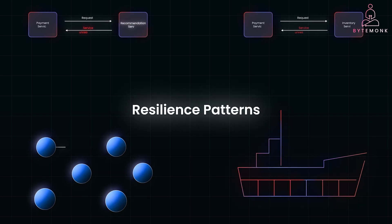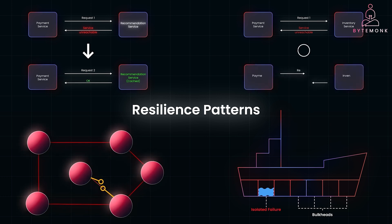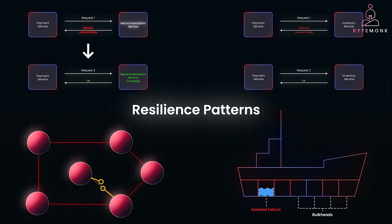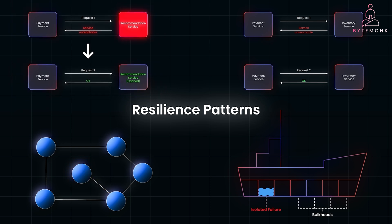To wrap things up, resilience patterns are essential for keeping your microservices running smoothly even when things go wrong — whether using circuit breakers to prevent cascading failures or fallbacks to provide alternative responses. These patterns ensure your system remains robust and reliable. If you are using any of these patterns in your projects, I'd love to hear about it. What's your favourite resilience pattern? Let me know in the comments below and don't forget to check out my other videos.